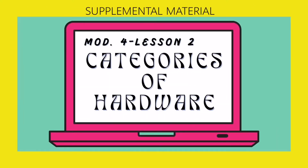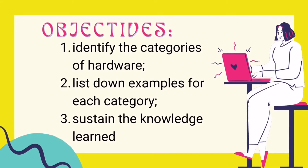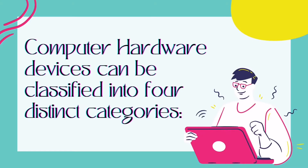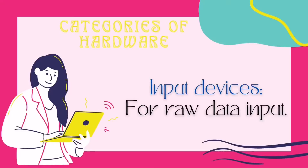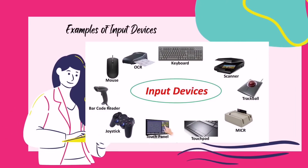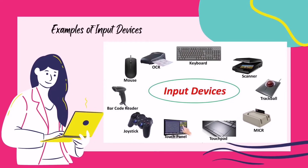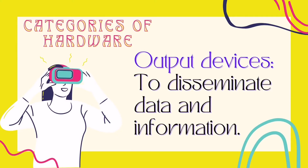In this video we will study about categories of hardware. Computer hardware is categorized into four. Number one is the input devices. Input devices are used to input or enter data and information to the computer. Input devices allow the end user to communicate with the computer.